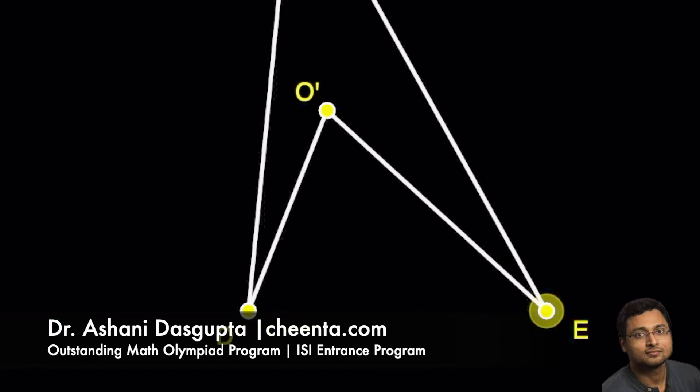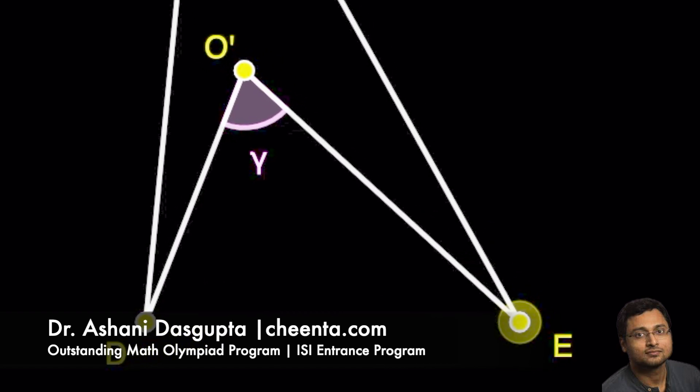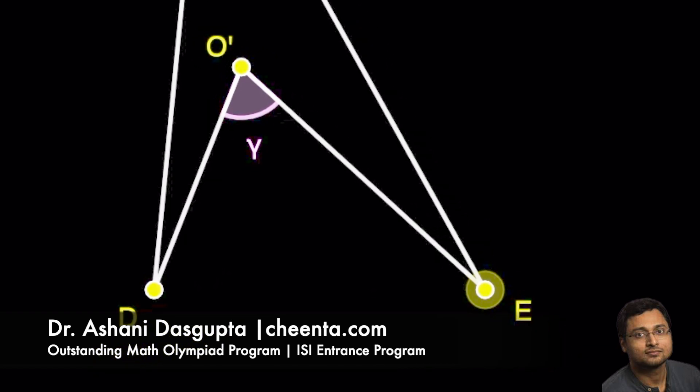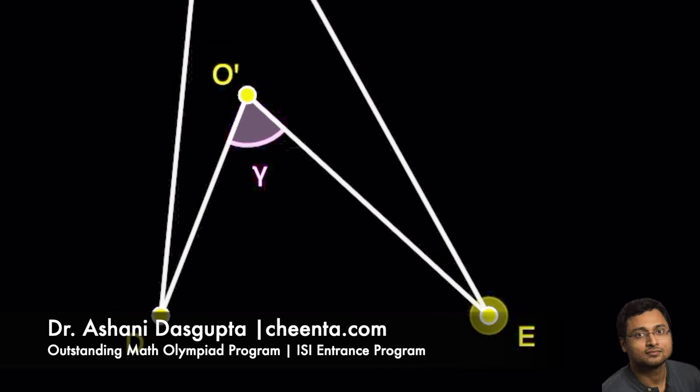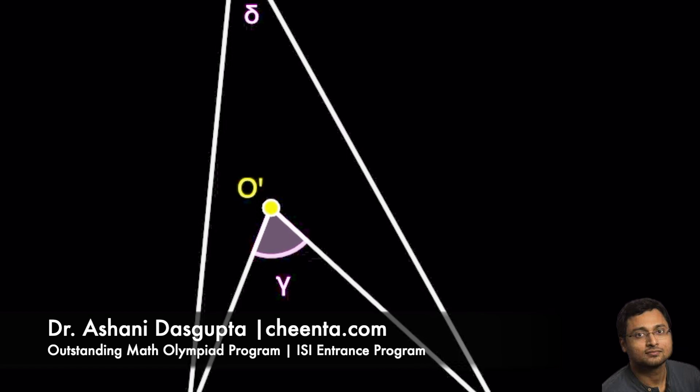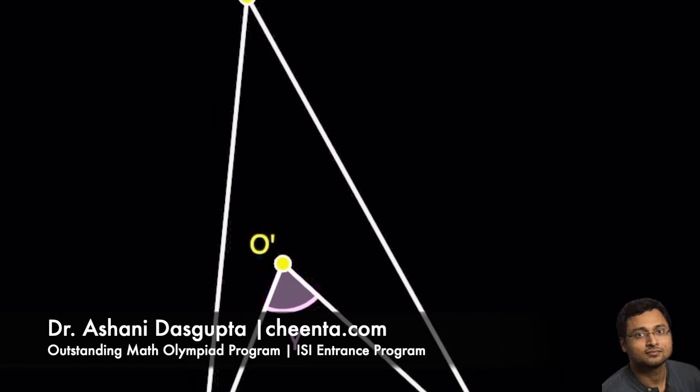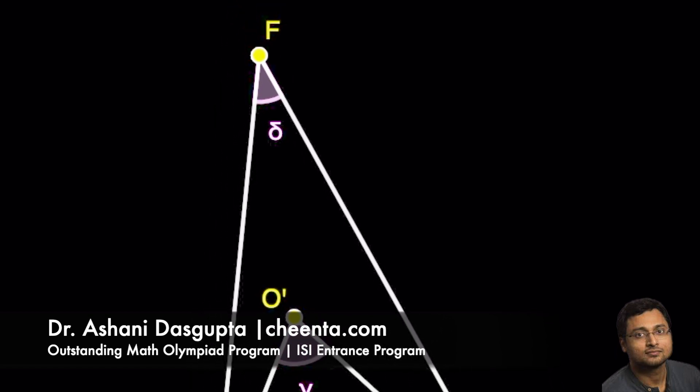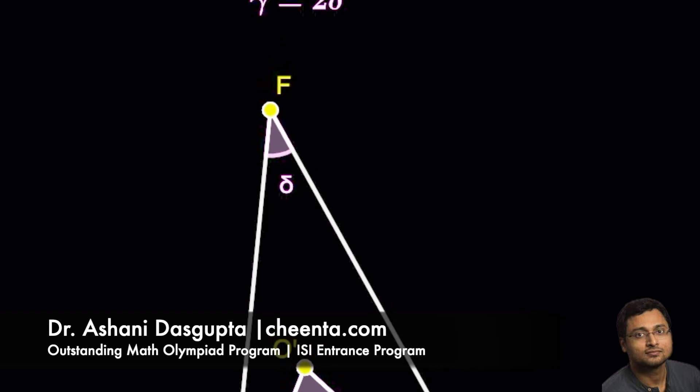Now, suppose it is given that angle D, O', E, which is gamma, is twice angle D, F, E, which is delta. It is given that gamma is twice angle delta.